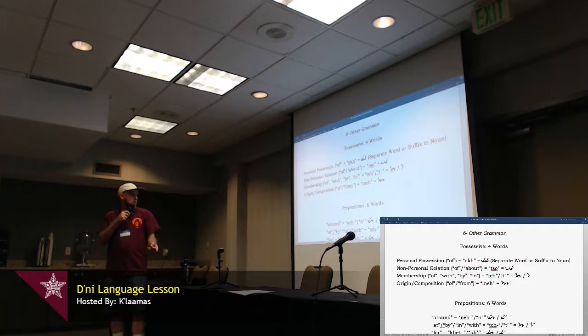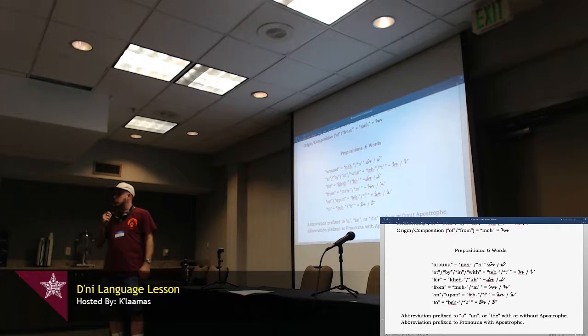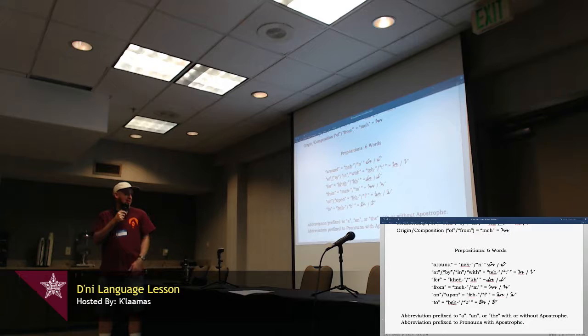Prepositions. Who here heard growing up, that a preposition is anything a squirrel can do to a tree? It can be on it, it can be under it, it can go around it, it can go through it. Those are prepositions. Those are with a suffix, that all end in eh, or, can be abbreviated with an apostrophe. So, around is ne, or ne. At, by, in, with, is te, or te. For, is che, or che. From is meh, or meh, on, or upon, is feh, or fuh. I sound like I'm almost swearing here. To is beh, or buh, like, buhfahsee, 225. So, it's just a prefix that can be abbreviated with an apostrophe.